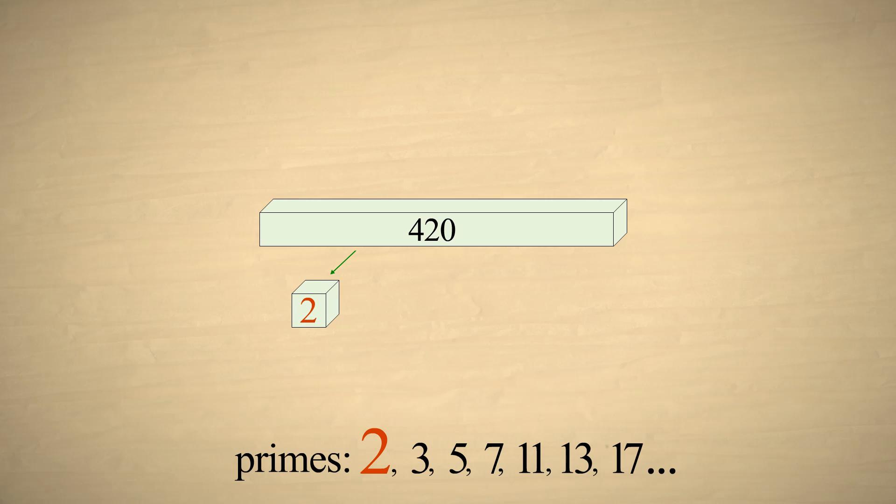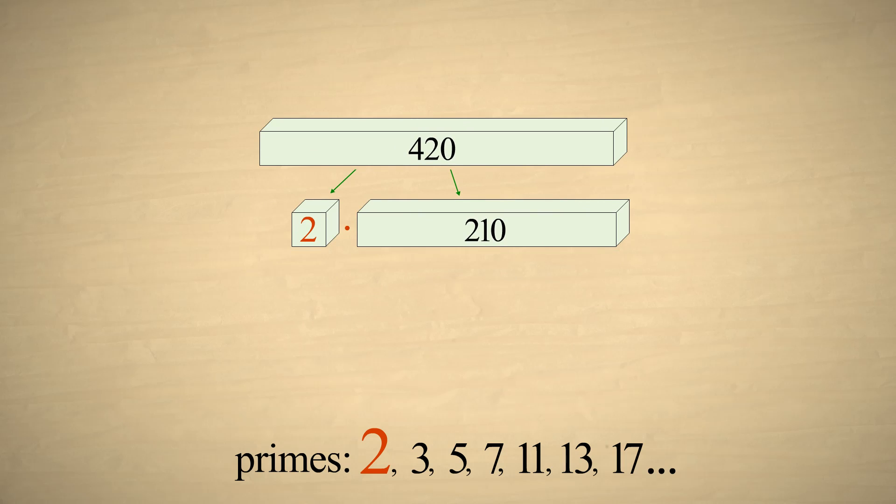Dividing 420 by 2 leaves 210. So 210 is also a factor. But is it prime or composite? If it is prime, then we can stop. We have found all the prime factors. However, 210 is even, so we can factor out another 2. We now have two factors of 2 times 105. If 105 is prime, then we can stop.